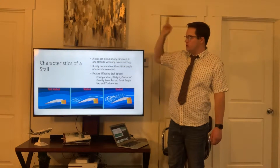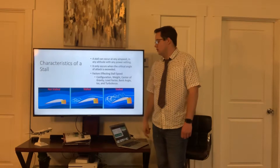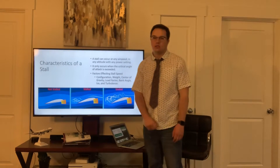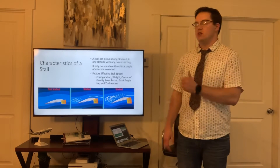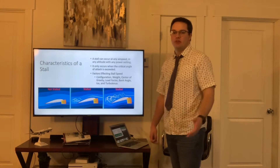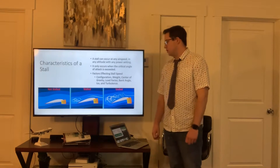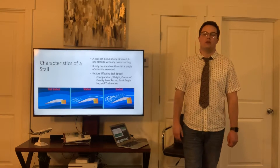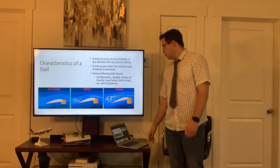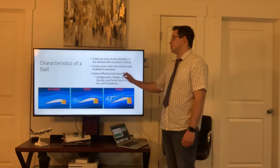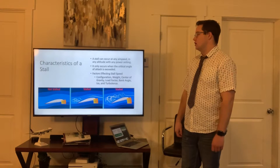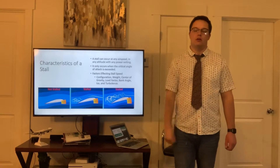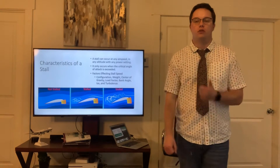In the not-stalled condition, you can see the relative wind with no disruption. In the stall, we're at a high angle of attack — around 60 degrees — and the airflow is being disrupted on the backside of the wing, causing loss of aileron effectiveness. One degree more results in a complete stall: the wing is no longer flying, airflow is no longer going over the wing uniformly, and the wing is no longer creating lift. We want to be aware of stall speed and factors that affect it: configuration, weight, center of gravity, load factor, bank angle, ice, and turbulence.